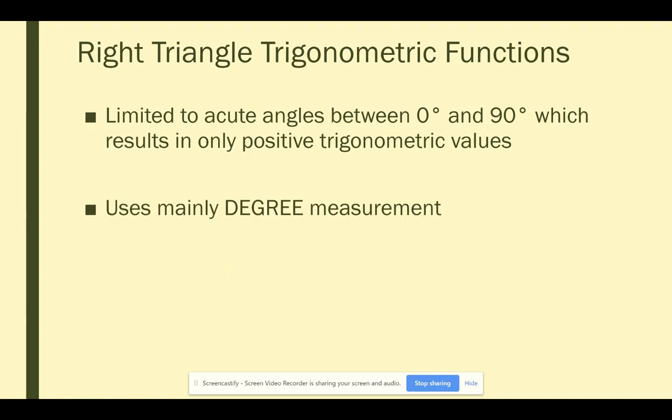Also, typically when we're dealing with right triangles, we deal with measurement in terms of degrees as opposed to radians. So right triangle trigonometry uses mainly degree measurement, which most people are familiar with.